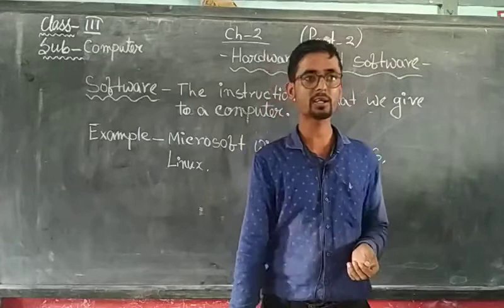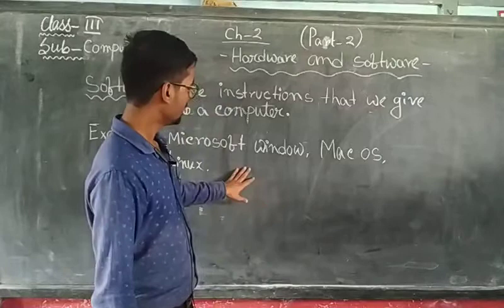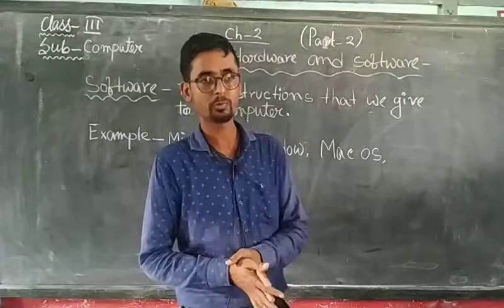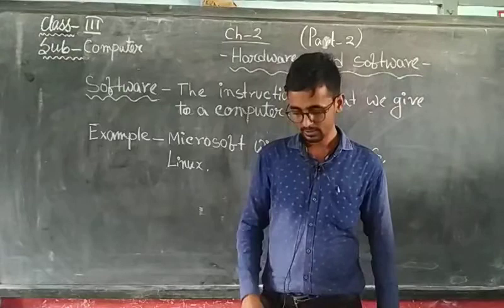There are different kinds of software. Mainly, usually, what we use is Windows — Microsoft Windows. This software we mainly use now in computers. Others are the Mac operating system and Linux. These are also computer software. But usually what we use is Microsoft Windows. At our school level, we have Windows 7 and Windows 10.